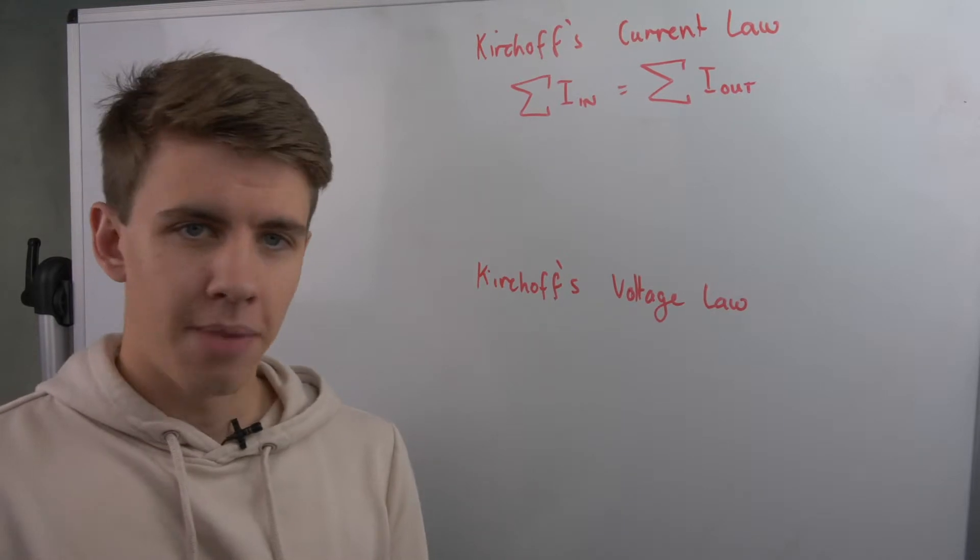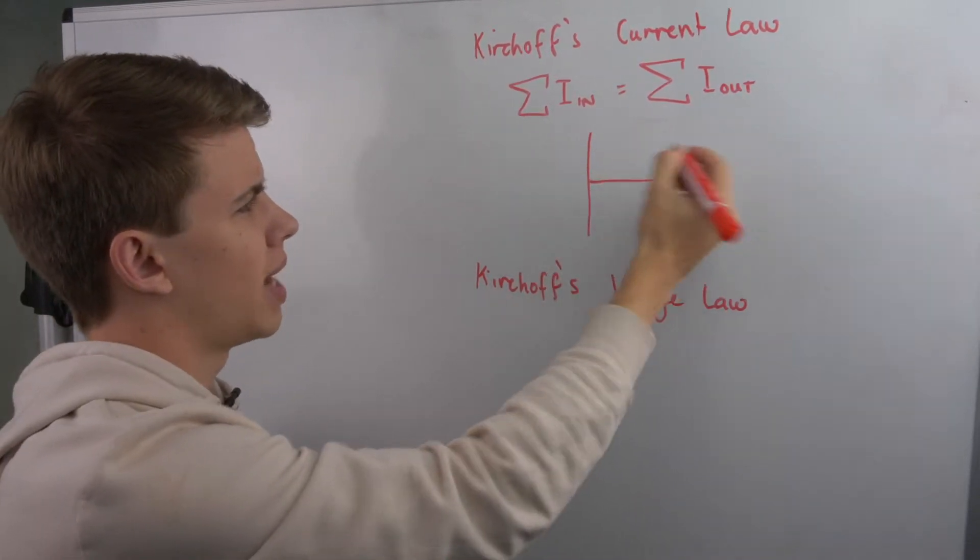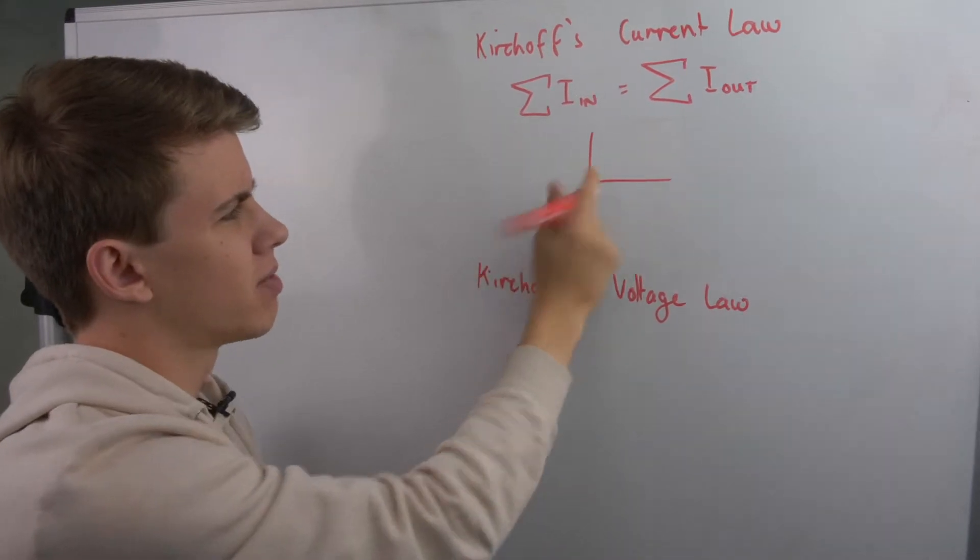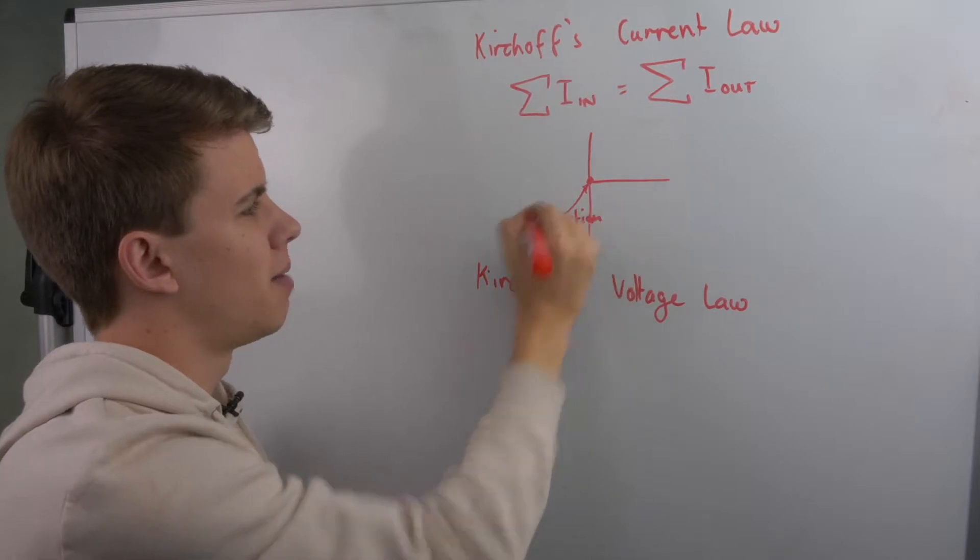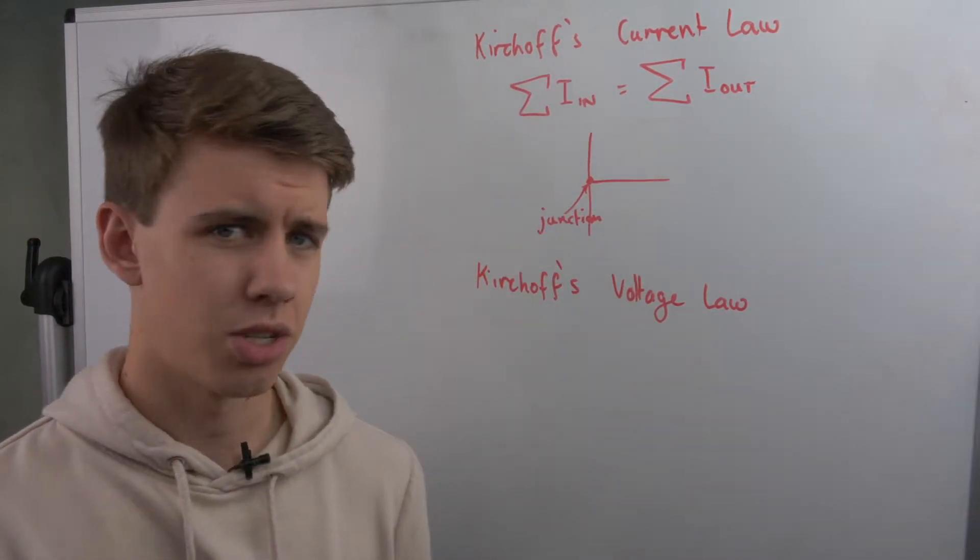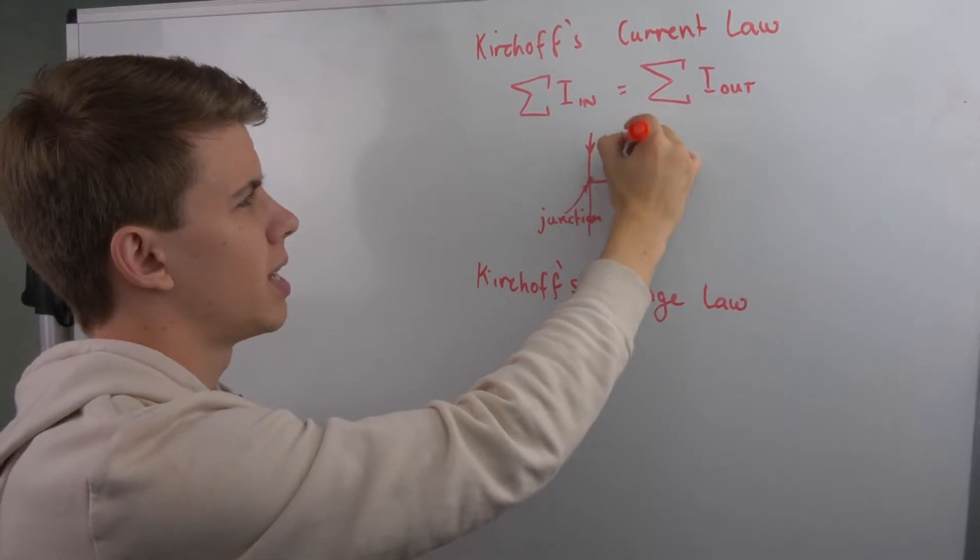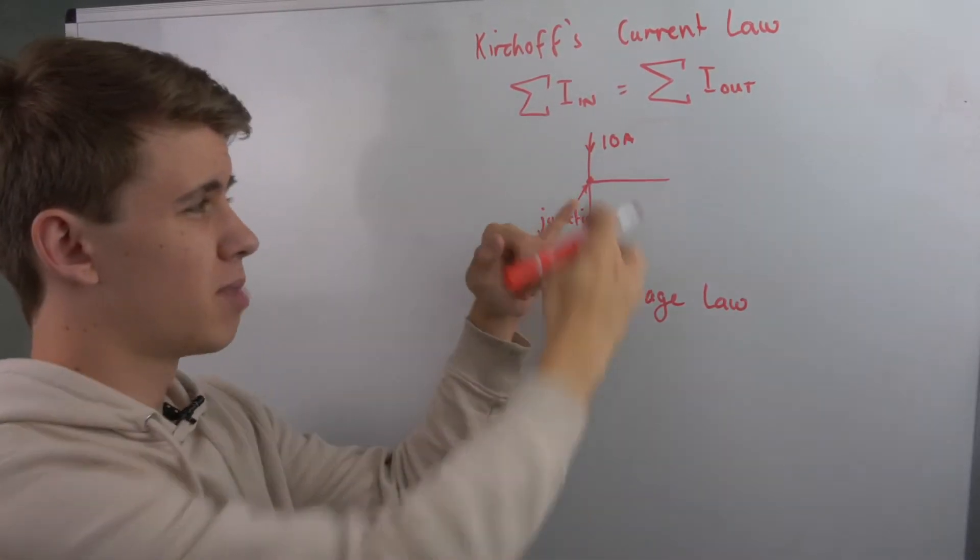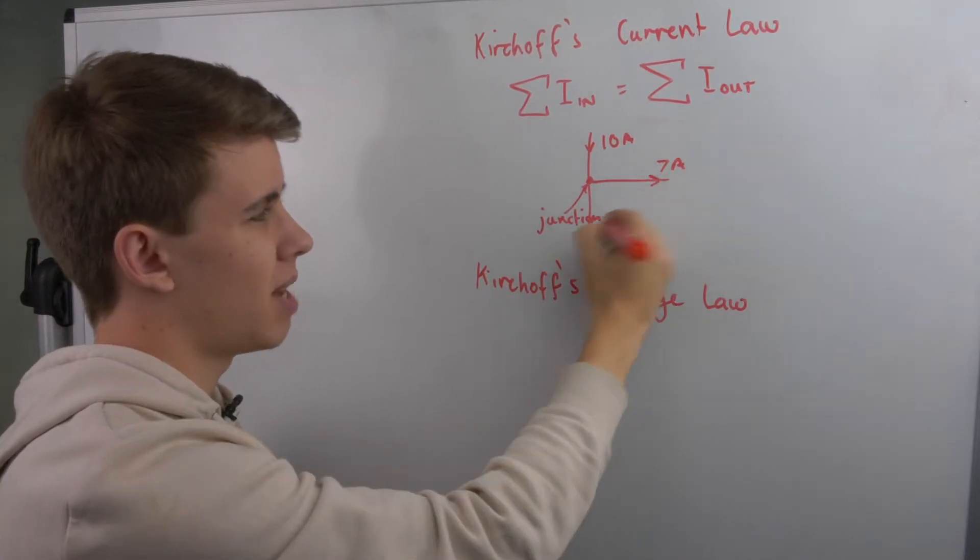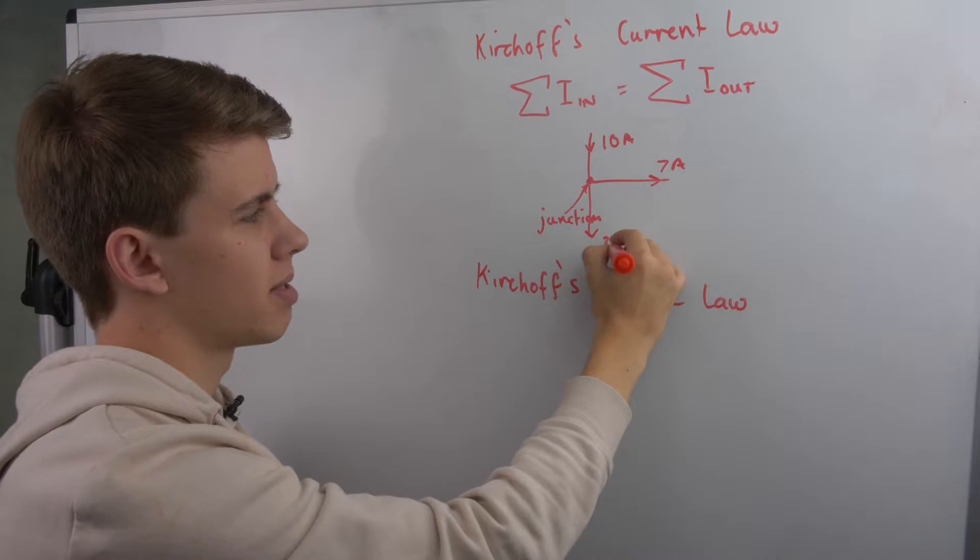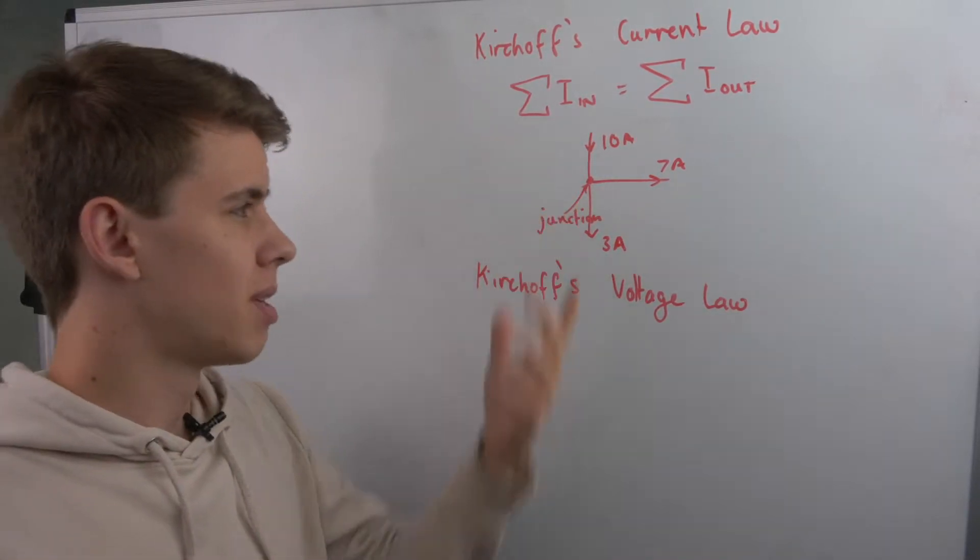Basically what that means is if we have some junction where we have something in parallel, this is what we call the junction. It can sometimes be referred to as a node, but most of the time we just call it a junction. If we have 10 amps of current coming into this junction and it splits up, that means if this is 7 amps, this amperage has to be 3 amps in order to add up to 10 amps.